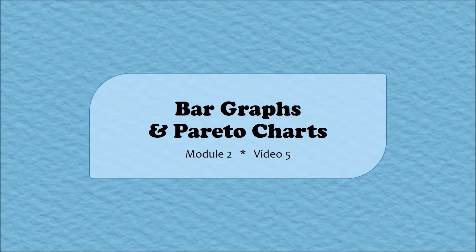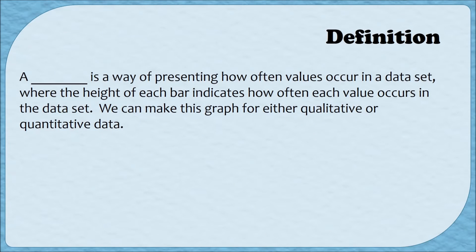Hello and welcome to video 5 of module 2. In this video we're going to be discussing bar graphs and a special type of bar graph called a Pareto chart. A bar graph is a way of presenting how often values occur in a data set, where the height of each bar indicates how often each value occurs in the data set.